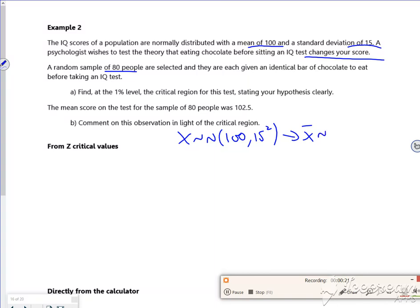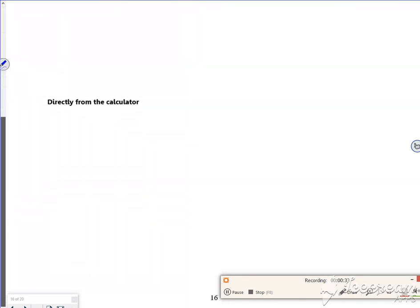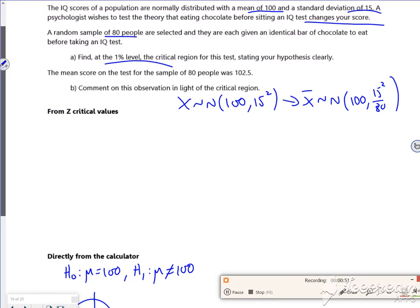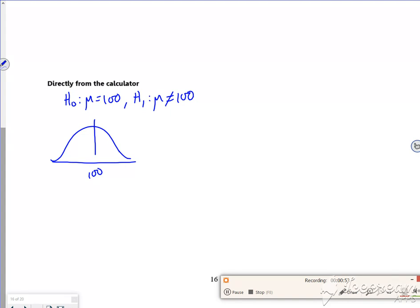X-bar is a normal with 100, 15 squared over 80. So I'm going to find the 1%. Now this is two-tailed, so my H0 is mu equals 100 and my H1 is mu is not 100. I'm going to do a two-tail, so it goes to 100. It's 1%, so it's 0.005 at each end.